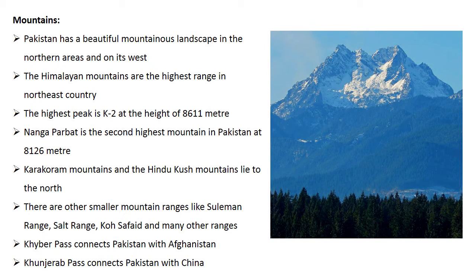Nanga Parbat is the second highest mountain in Pakistan at 8,126 meters. The Karakoram mountains and the Hindu Kush mountains lie to the north. There are other smaller mountain ranges like the Sulaiman Range, Salt Range, Koh-e-Safed, and many others. Khyber Pass connects Pakistan with Afghanistan, and Khunjerab Pass connects Pakistan with China. Roads and tunnels have been cut through the mountains to provide passage and travel routes.